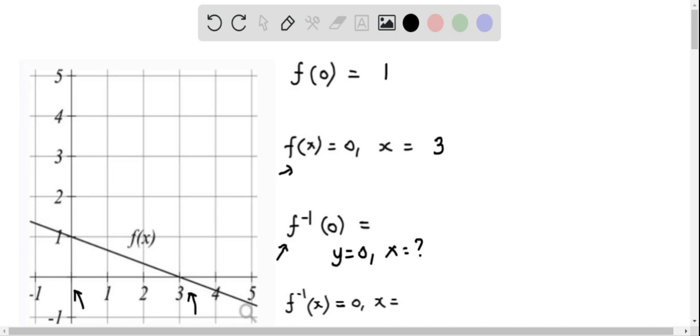Using this graph of the function f of x, y becomes 0 when x equals 3. So therefore, we see that the answer to this question, that is, f inverse of 0 equals 3.